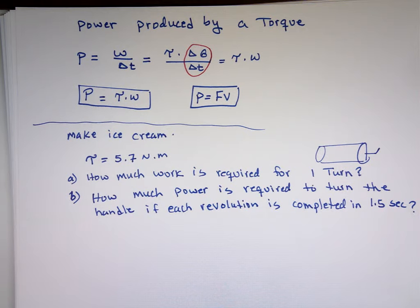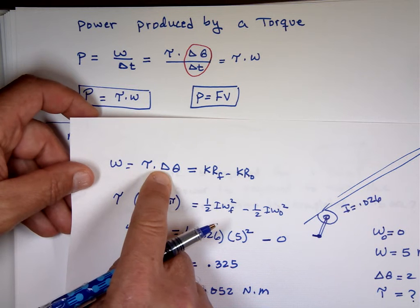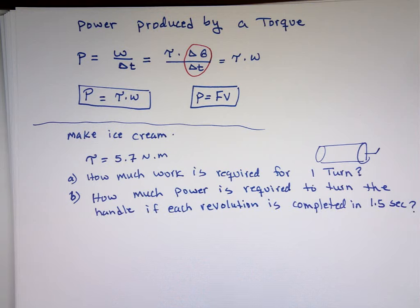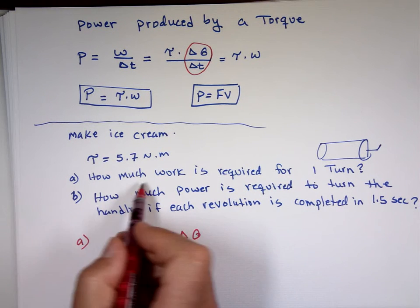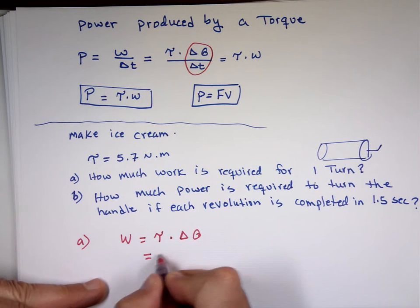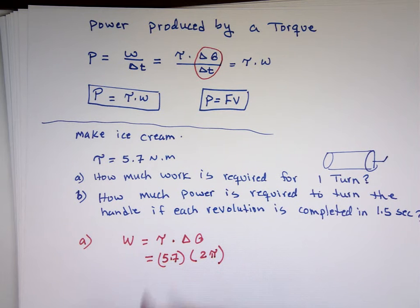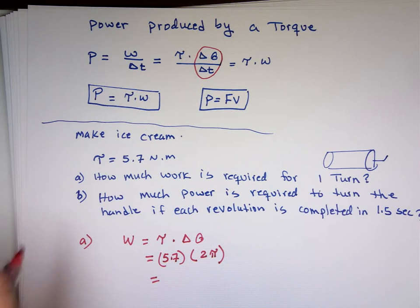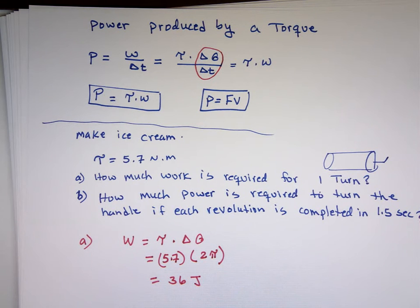Well, let's look. Work, the first question. What is work? Torque times delta theta. So I can use this. So for part A, how much work? Work is torque times change in theta. How much work is required for one turn? One revolution. We know what the torque is, 5.7. One turn, that's how many radians? Isn't that 2 pi? 5.7 times 2 times pi, which is 36, roughly, 36 joules. Work is always measured in joules, power, and watts.